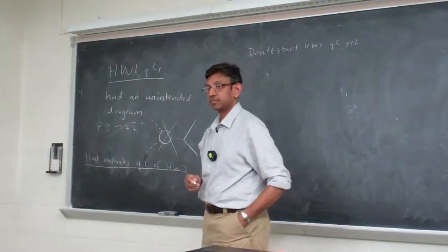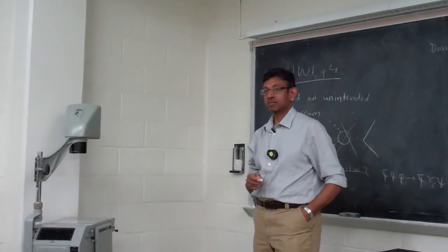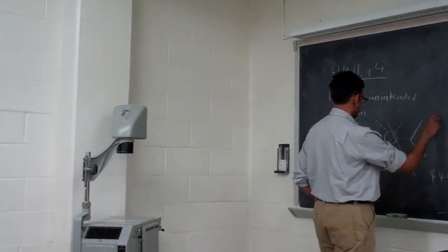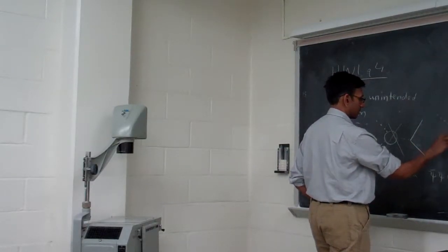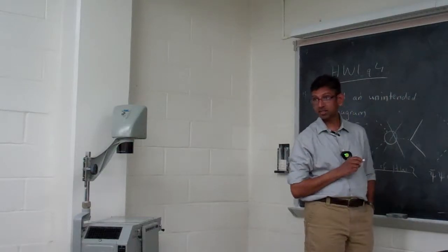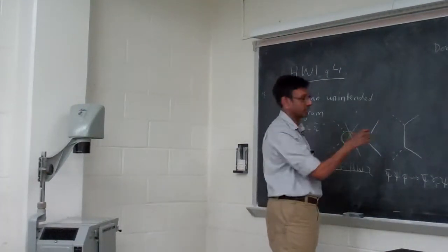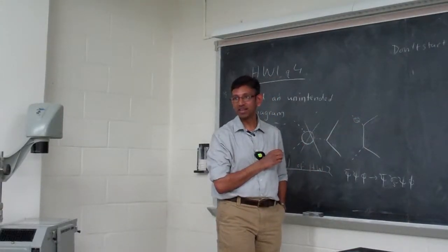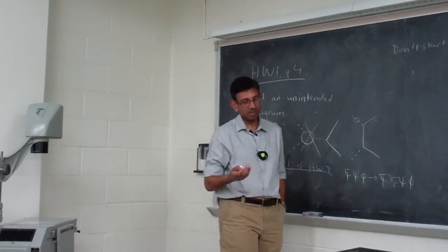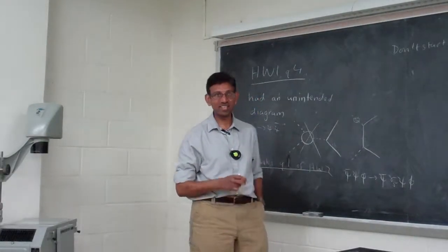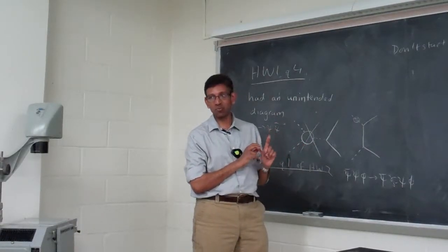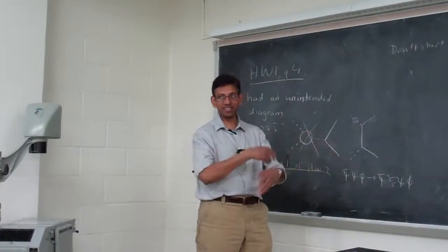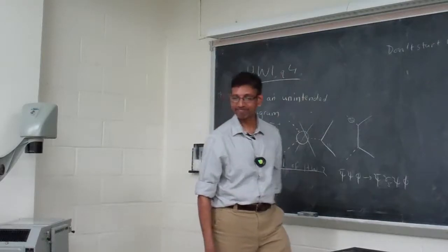A student asks: what was the diagram we were supposed to draw on homework problem four? The instructor explains: there's this diagram, but of course these are external states, so they have the best propagators sitting here. Each of these problems is chosen to do only one very small thing, and in the end, the real problem has all of these things — all the subtleties.